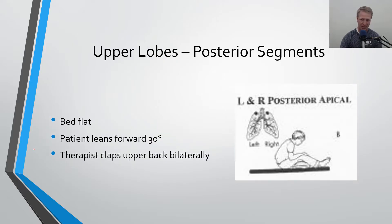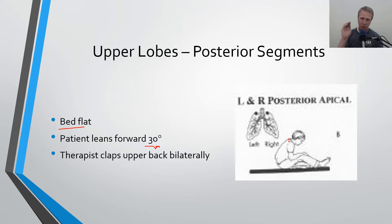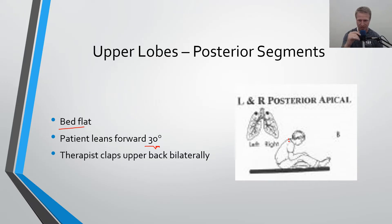For the posterior segments of the upper lobes, the bed is flat and the patient is leaning forward 30 degrees. The therapist claps over the back bilaterally. Remember, when you're clapping you're using a cupped hand, which creates percussion allowing drainage in the lungs to start moving, using gravity to assist getting the drainage out of the lung segments into the bronchioles and up out of the system.